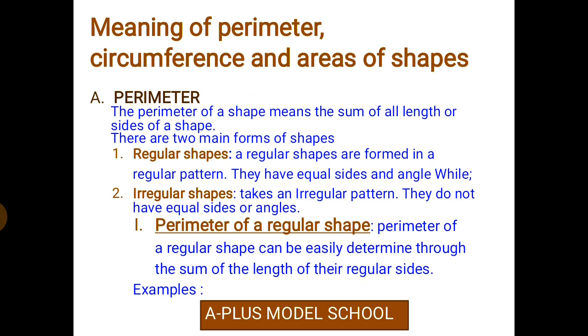There are two main forms of shapes. Regular shapes are formed in a regular pattern. They have equal sides and angles. Irregular shapes take an irregular pattern. They do not have equal sides or angles.